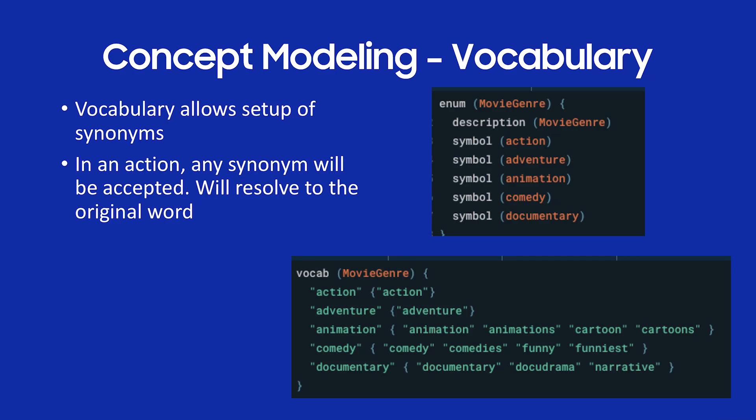To give a second example of concept modeling and vocabulary — here I have a vocabulary for movie genres: action, adventure, animation, etc. For instance, if I said 'cartoon,' Bixby would interpret that as animation. Or if I said 'funny,' Bixby would interpret that as comedy. This is a really powerful thing that allows the user to speak in a natural way, and allows Bixby to resolve that to a particular input so you can understand it in your code.